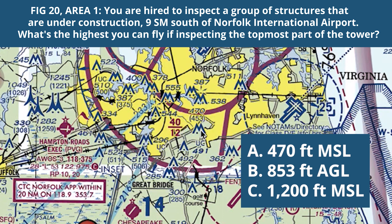Correctly identifying towers, heights, and under-construction markings is challenging. It can be confusing due to the amount of information printed on some of the charts, and the placement of information doesn't always appear in the same exact way relative to the different icons. When you're going through a course like ours, you're going through dozens of these practice questions and you'll get a much better feel for that.